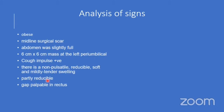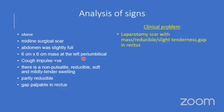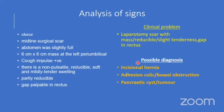The mass is partly reducible, slightly tender, and a gap is palpable in the upper rectus sheath. The clinical problem after examination is a laparotomy scar with a reducible mass and slight tenderness, with a gap felt in the rectus sheath. The possible diagnosis is incisional hernia with adhesion colic and bowel obstruction as probable causes.